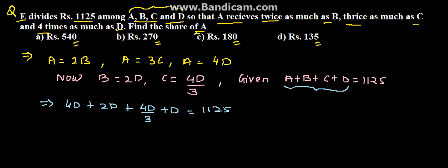So here we have taken A equals 4D, B equals 2D, C equals 4 by 3D, and D itself. So 4D plus 2D plus 4 by 3D plus D equals 1125. We get 25D by 3 equals 1125.